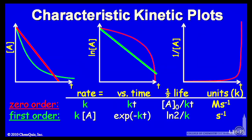So the characteristic plot for first order kinetics is natural log of concentration versus time. And of course, 1 over concentration versus time for a first order reaction will not give you a linear plot.